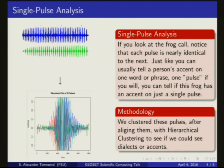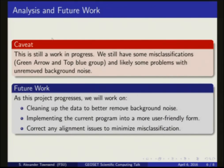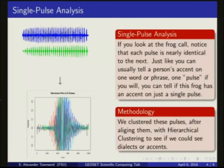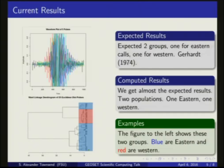Since this is a new method, we also wanted to validate any pattern seen against previously known results. According to previous research by Dr. Gerhardt in the 1970s, if this method works, we should see a distinct eastern and a distinct western group. And this is almost exactly what we get. As you can see here in this figure, we get two very distinct groups, one blue and one red. Here the red group is the western group, which separates out very nicely from the rest, while the blue group is the eastern group.